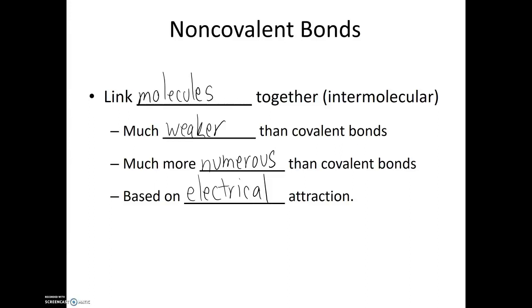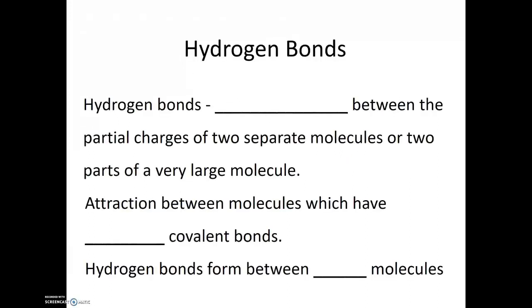So we'll talk about two categories of non-covalent bonds, the first being hydrogen bonds. Hydrogen bonds are the attractions between the partial charges of two separate molecules, or two parts of a very large molecule. And this is specifically the attraction between molecules which have polar covalent bonds. Hydrogen bonds form between water molecules. For example, since water is a polar molecule, the attraction between two water molecules is called a hydrogen bond.